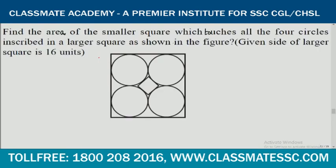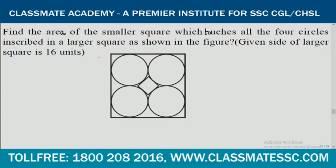Next question: find the area of the smaller square which touches all four circles inscribed in a larger square, as shown in the figure. The side of the larger square is 16 units. Half of it is 8 units, and again half of that is 4 units. So the radius of each circle inside the square is equal to 4.